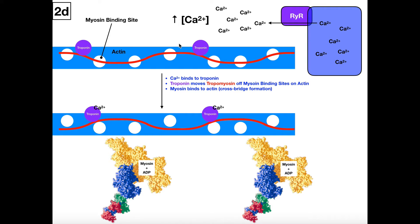The sarcomere is the functional unit of the muscle. When a muscle shortens, a muscle is the sum of its parts, so when the muscle shortens you're going to have thousands, millions of sarcomeres shortening at the same time. These are going to be the events for one sarcomere, but this is happening universally throughout that muscle.